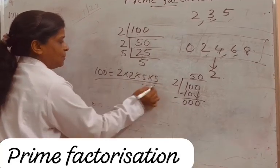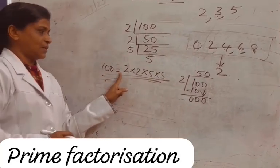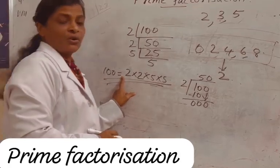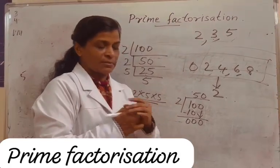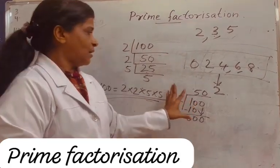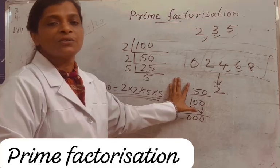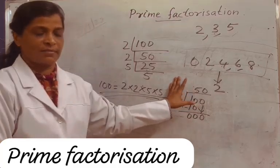So prime factorization of 100 is 2 into 2 into 5 into 5. I hope you all enjoyed the class. Subscribe to the channel for more useful videos. Thank you for watching.